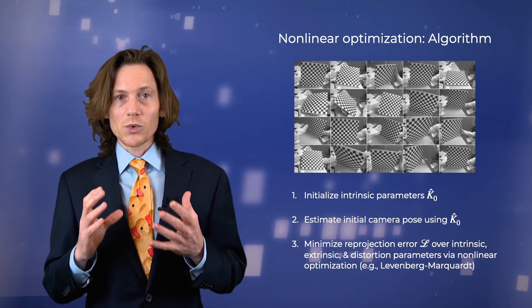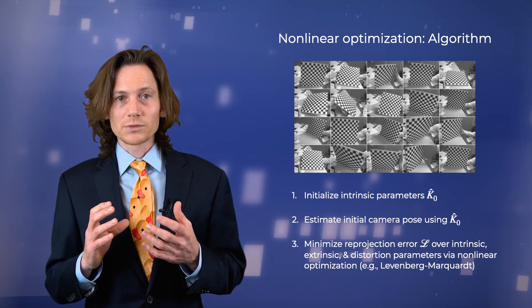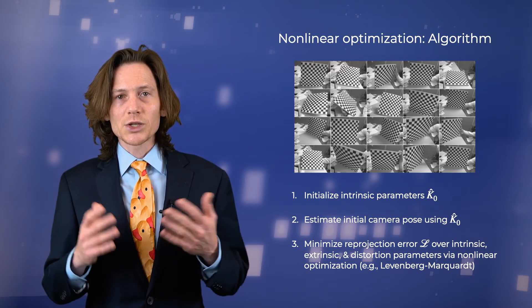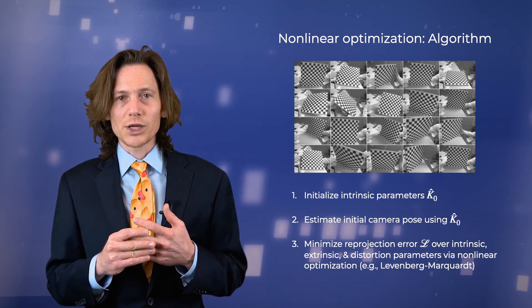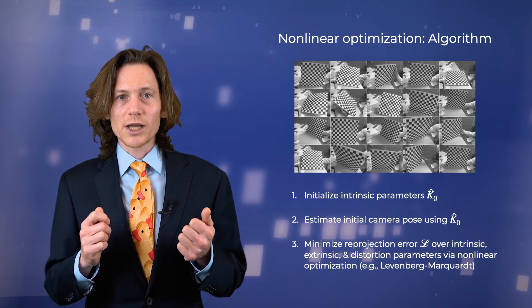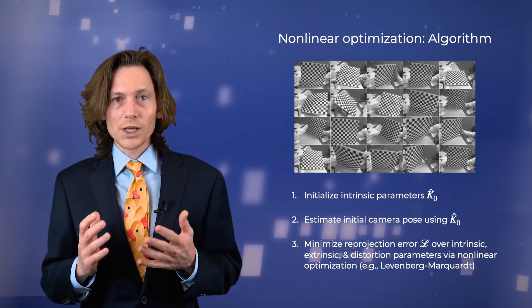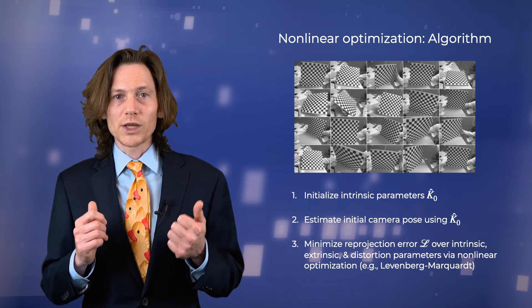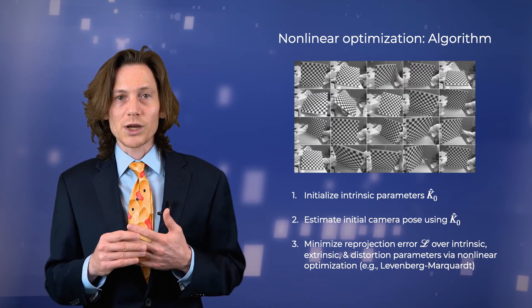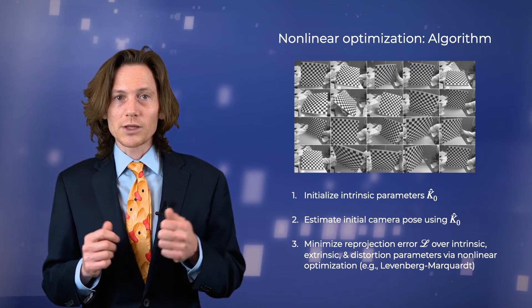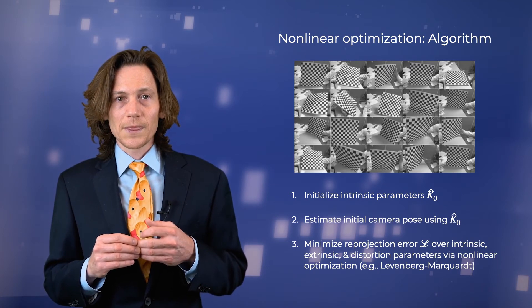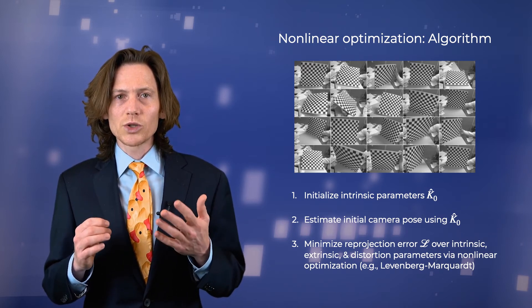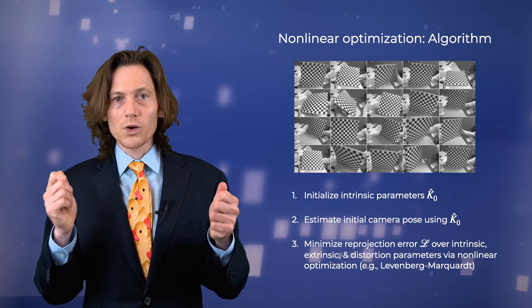We now have a nonlinear least squares problem, which is typically solved in an iterative fashion. We first initialize the intrinsic matrix based on any prior knowledge we have of the parameters, such as information provided in the camera's datasheet. We then use this initialization to derive an initial estimate of the camera pose. At this point, we can use our favorite optimizer, such as Levenberg-Marquardt, to iteratively solve for the intrinsic and extrinsic parameters that minimize the reprojection error. Keep in mind there is no guarantee that the resulting estimates are globally optimal. Oftentimes, we do this as part of a robust estimation algorithm like RANSAC in order to reduce the effects of erroneous point pair correspondences.